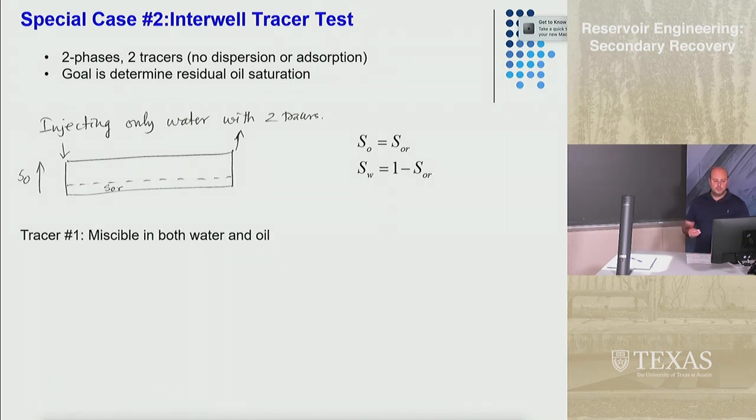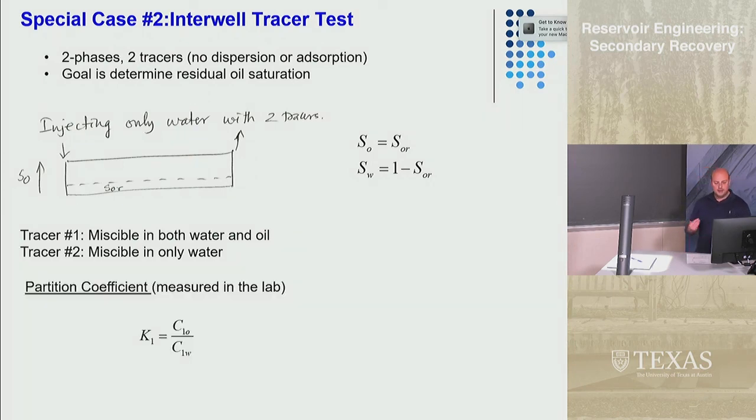The first tracer we're going to choose is miscible in both water and oil. Maybe some alcohols would be miscible in both because it's got a molecular structure that's similar to oil, some carbons in it, but it's also got some polar attributes as well like water. The other tracer is only going to be miscible in water. We're going to have a partition coefficient, which is the concentration of the tracer in the oil versus the water at equilibrium.